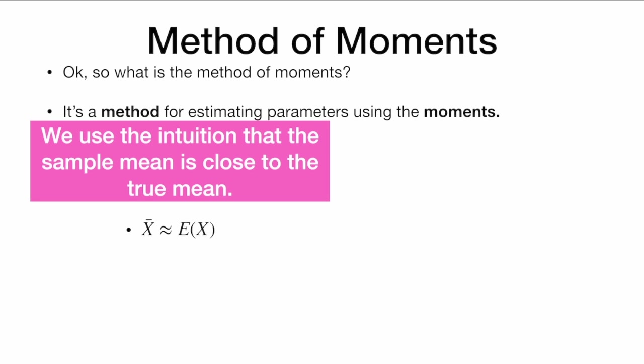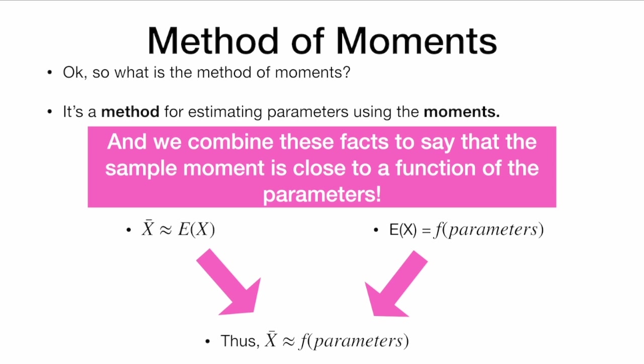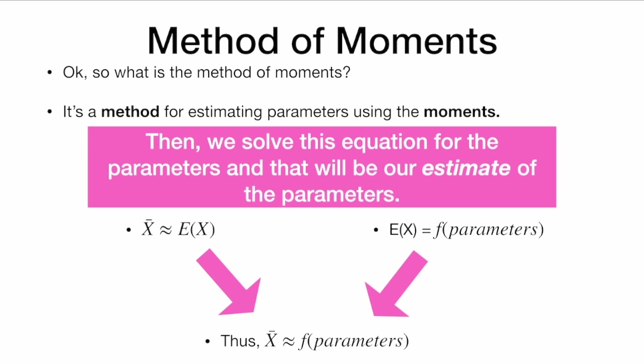So what is the method of moments? It's a method for estimating parameters using the moments. We use the intuition that the sample mean is close to the true mean, so we write x-bar ≈ E[X]. We've also said that E[X] can be expressed as a function of the parameters we want to learn. Combining these facts, the sample moment is close to a function of the parameters, and we simply solve this equation for the parameters — that gives us our estimate.